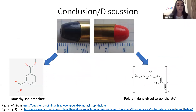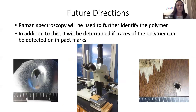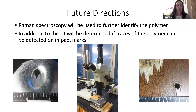IR spectroscopy revealed that the blue bullet has similar functional groups to dimethyl isophthalate, while the red polymer has similar functional groups to polyethylene glycol terephthalate. Using IR, we have an idea of the composition of the polymers. Next, Raman spectroscopy will be used to either further identify the polymer or confirm the IR results. Additionally, since these types of polymer-coated bullets do not retain individualizing minutiae like standard bullets do, it will be determined if traces of the polymer can be detected on impact marks.